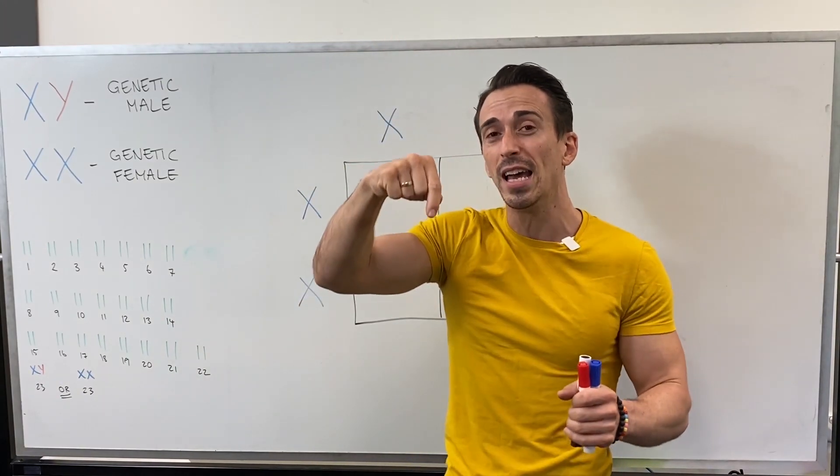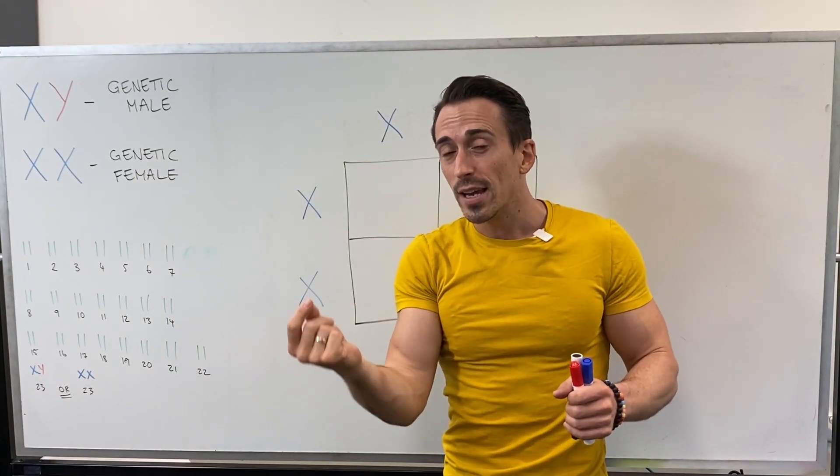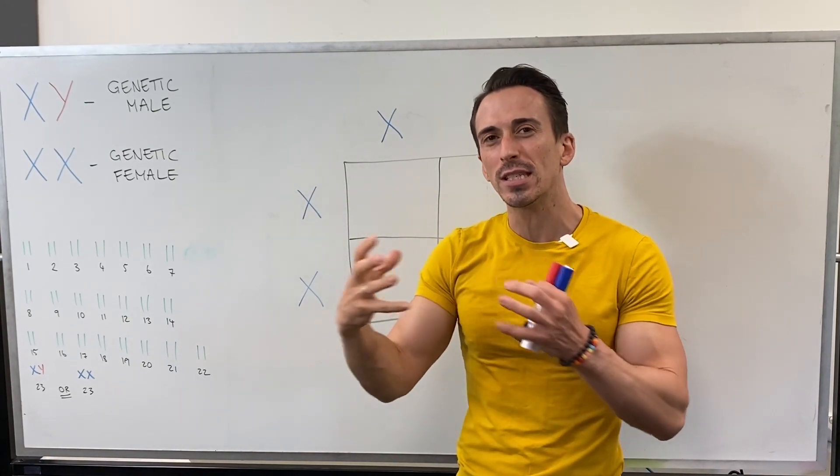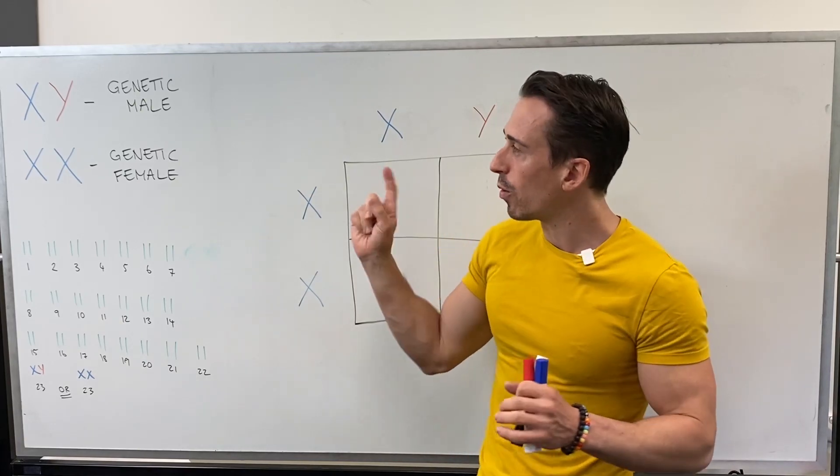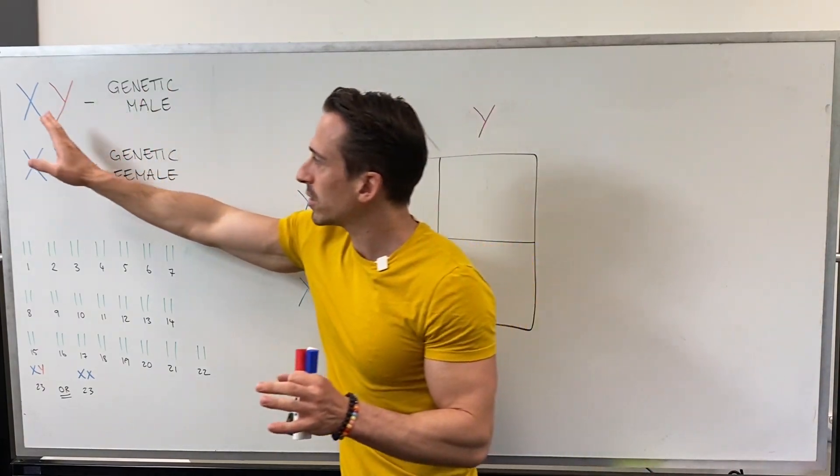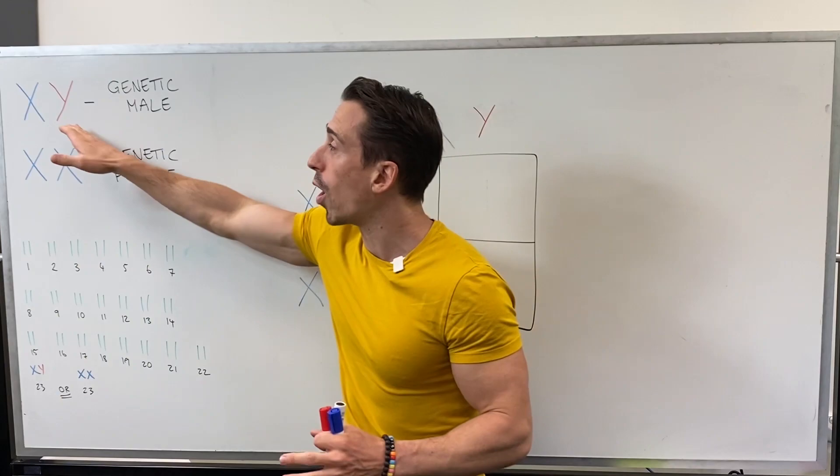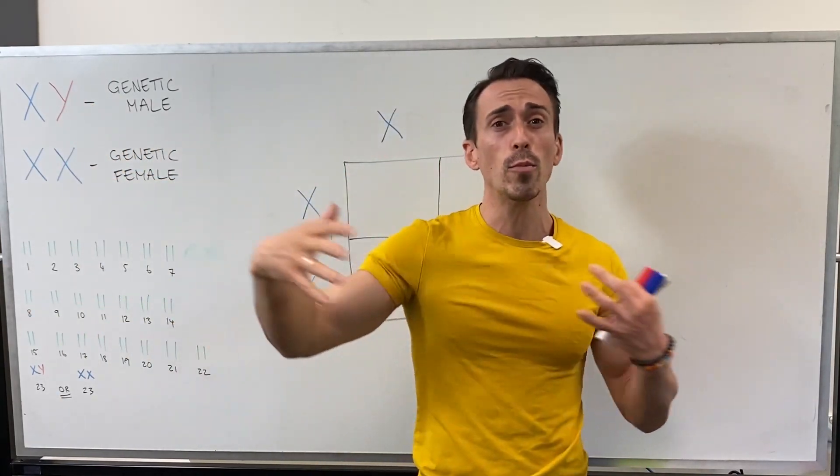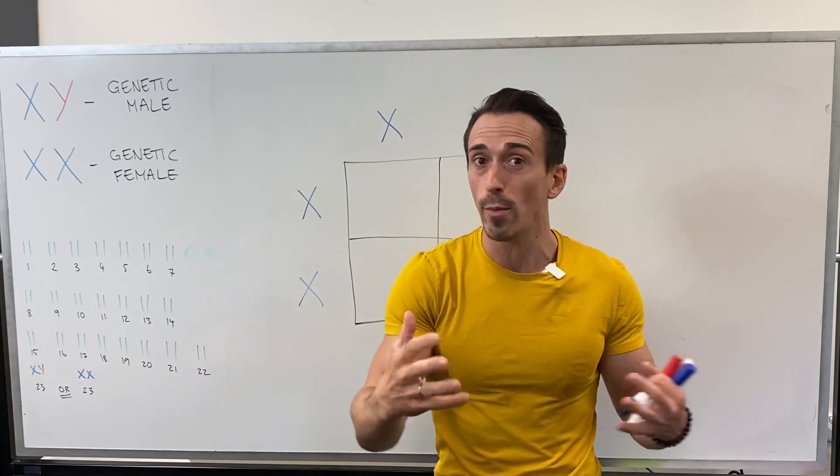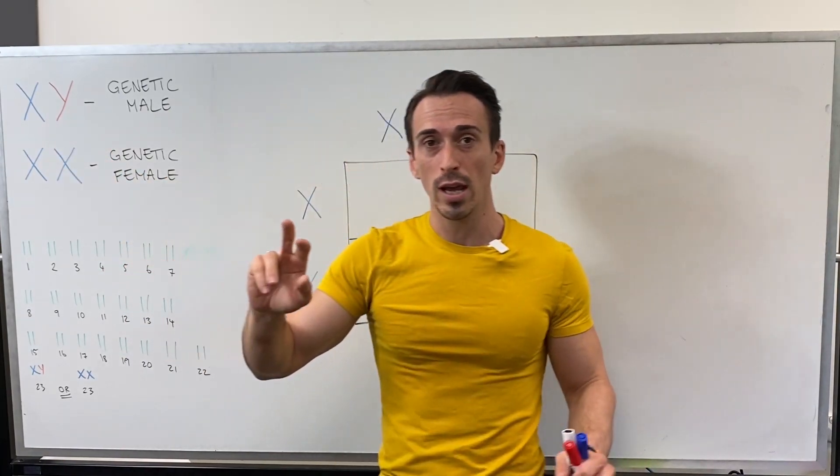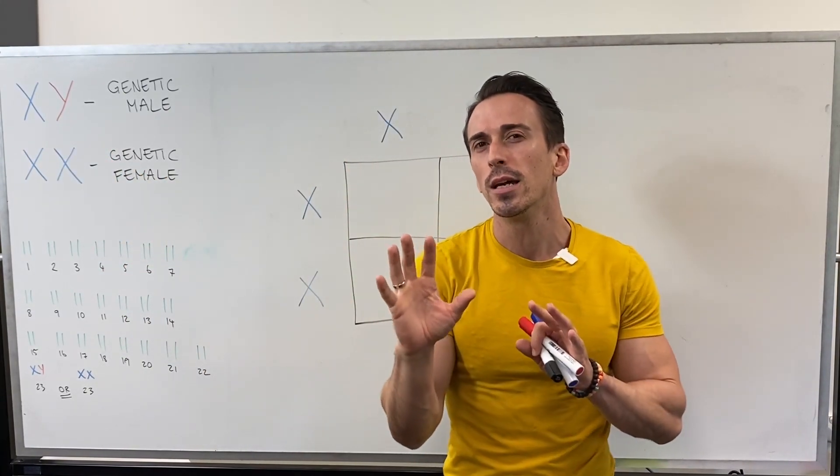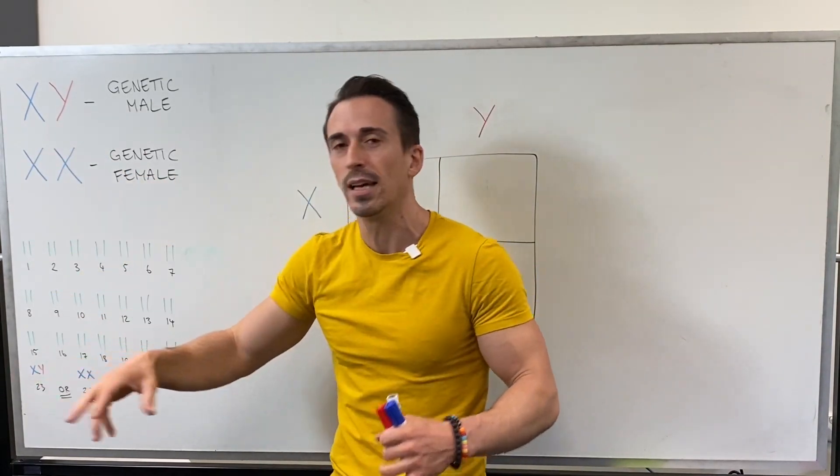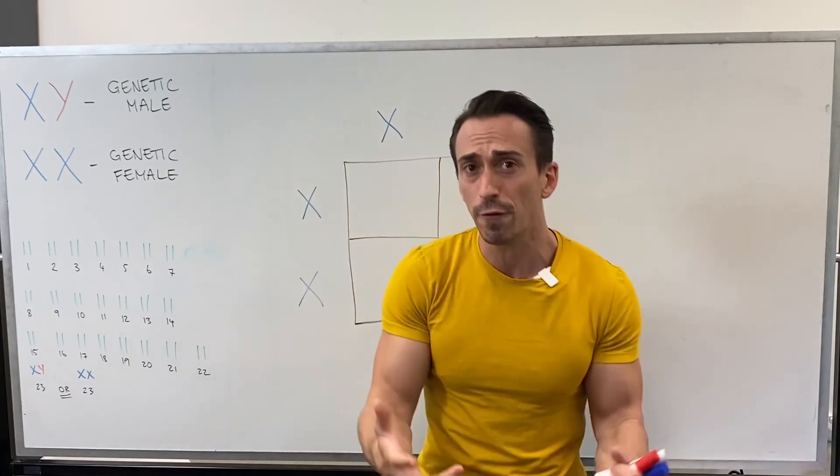So what we're focusing on today are traits that are inherited on these chromosomes. And the reason why we need to do it separately is because what we find is that the X chromosome is a lot bigger than the Y chromosome. And because of that fact, the X chromosome contains way more genes, therefore way more traits than the Y chromosome, and so the inheritance pattern is slightly different. And because genetic males are XY and genetic females are XX, the inheritance patterns work differently.